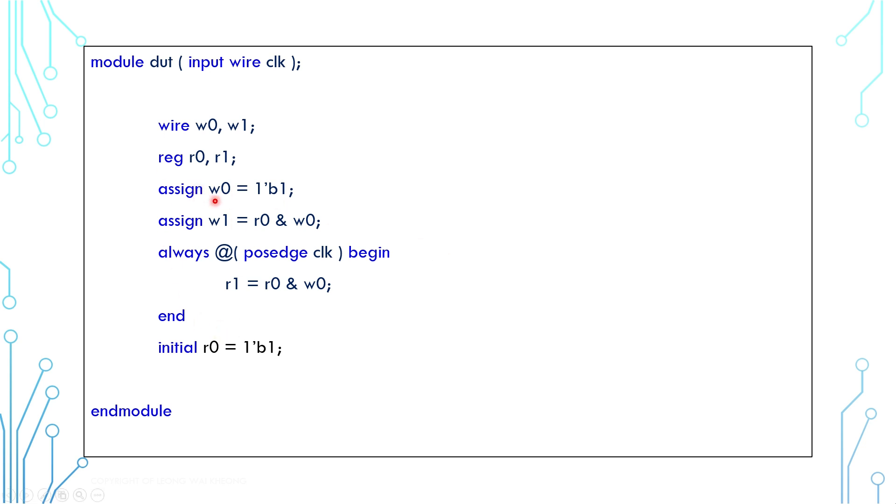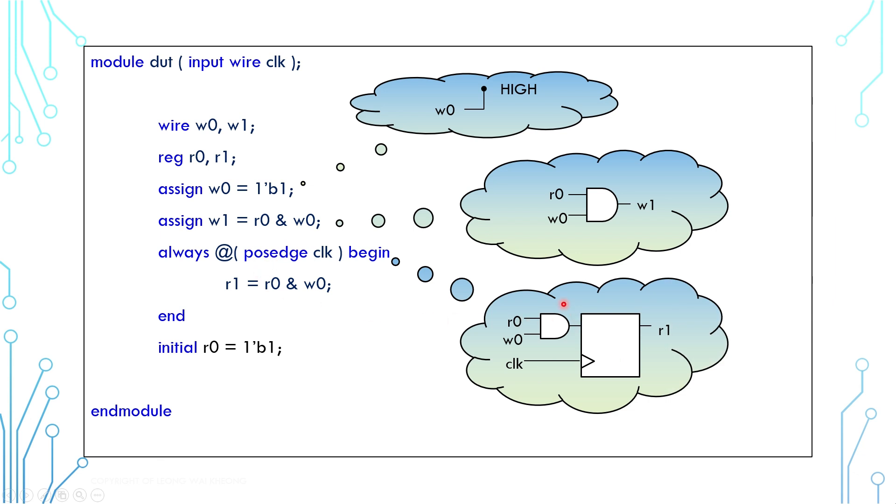From a synthesis perspective, this assign statement will connect W0 to a high supply. This one will create one AND gate where W1 is connected to W0 and R0. This always block will create one AND gate plus one register where R1 is connected to clock W0 and R0. Initial block is a pure simulation code. It cannot be translated into any logic gates and connection. It can be used as a test bench to drive stimulus to the design.